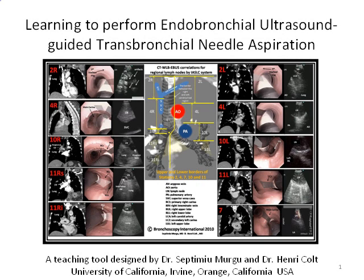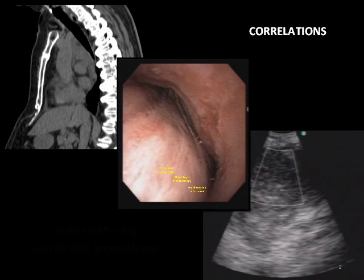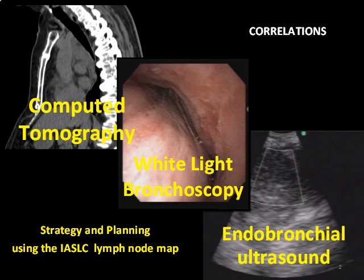This poster was designed to help bronchoscopists perform endobronchial ultrasound guided TBNA. Endobronchial ultrasound, also known as EBUS, is used to sample mediastinal and hilar lymph nodes in patients with cancer and benign disease. This lesson explains the use of a specially designed teaching tool and the lymph node map adopted by the International Association for the Study of Lung Cancer.